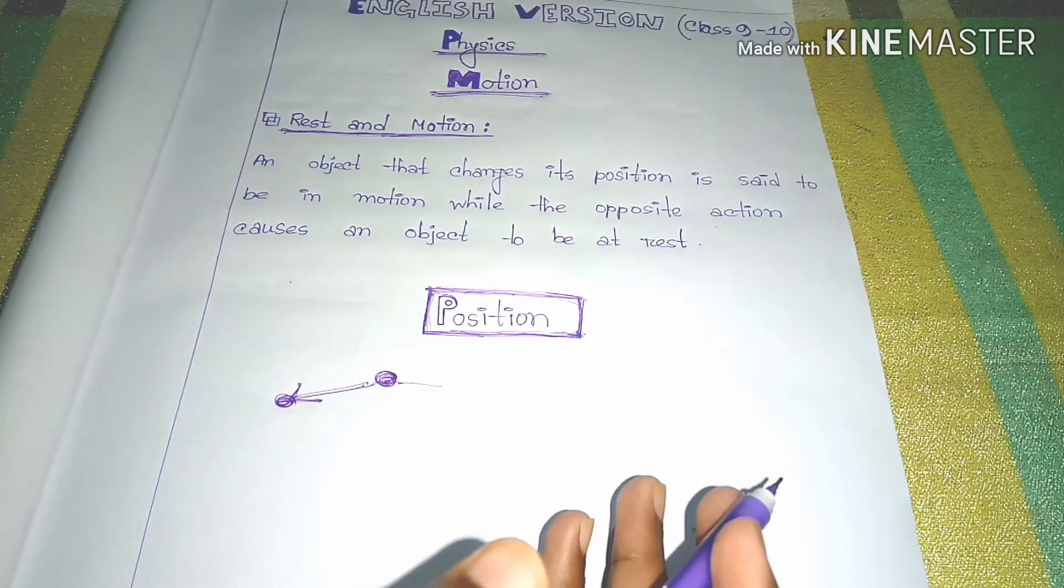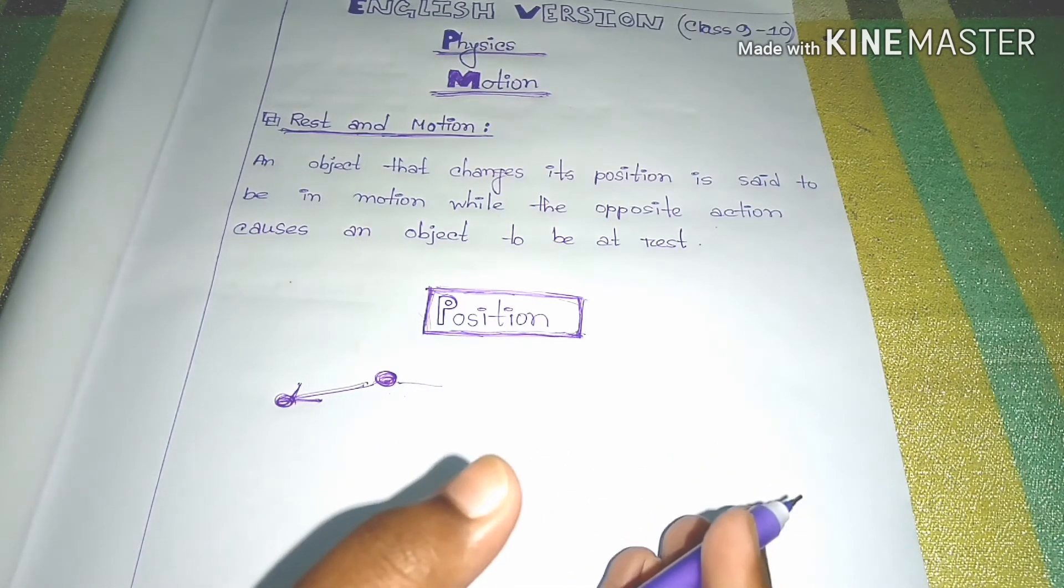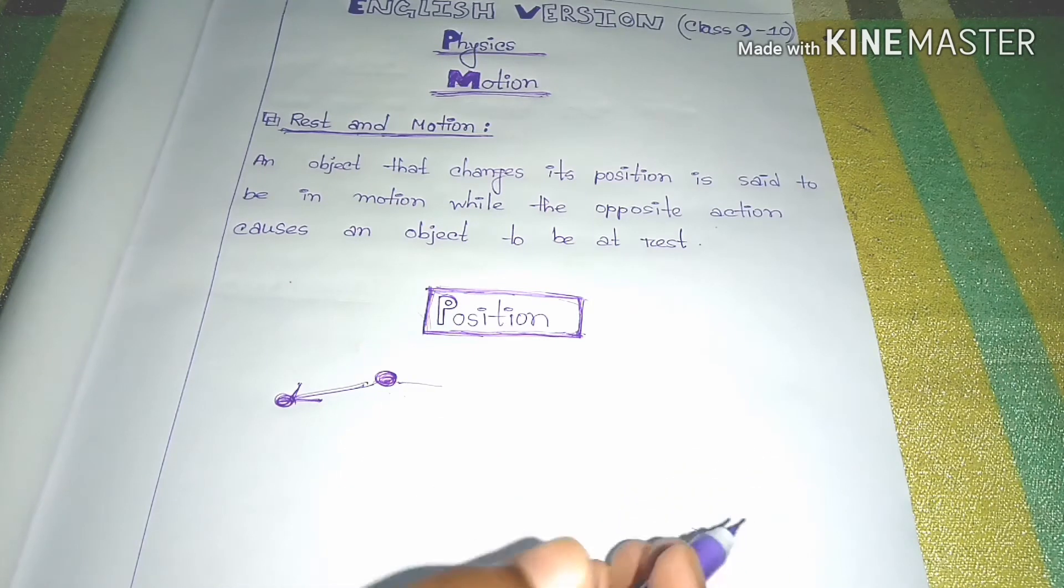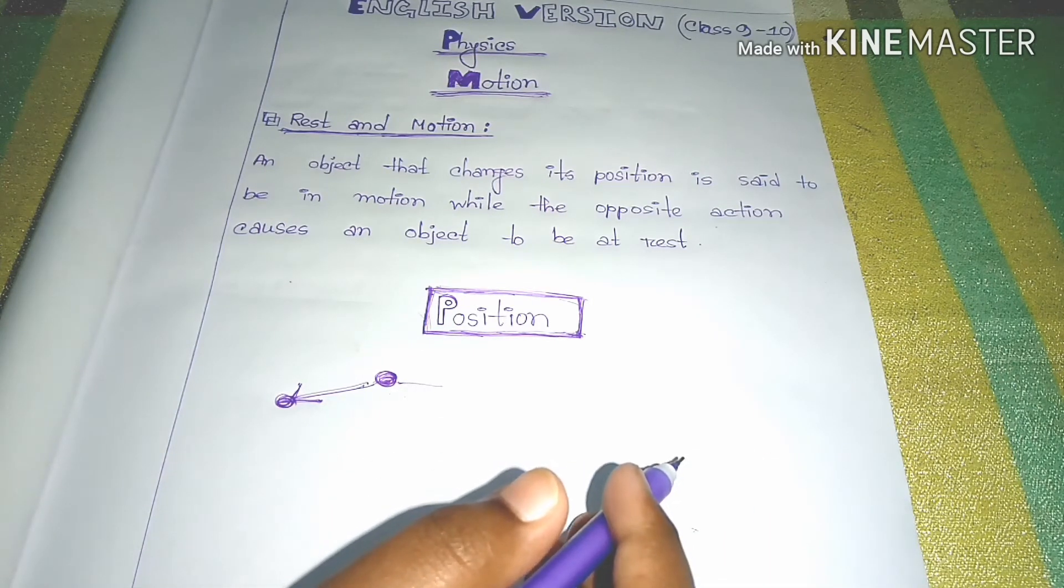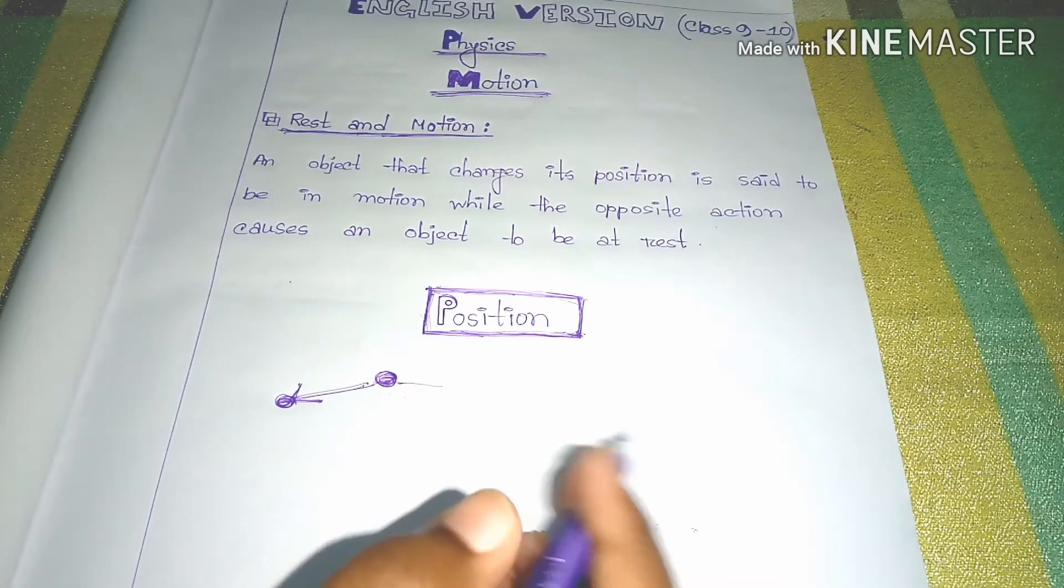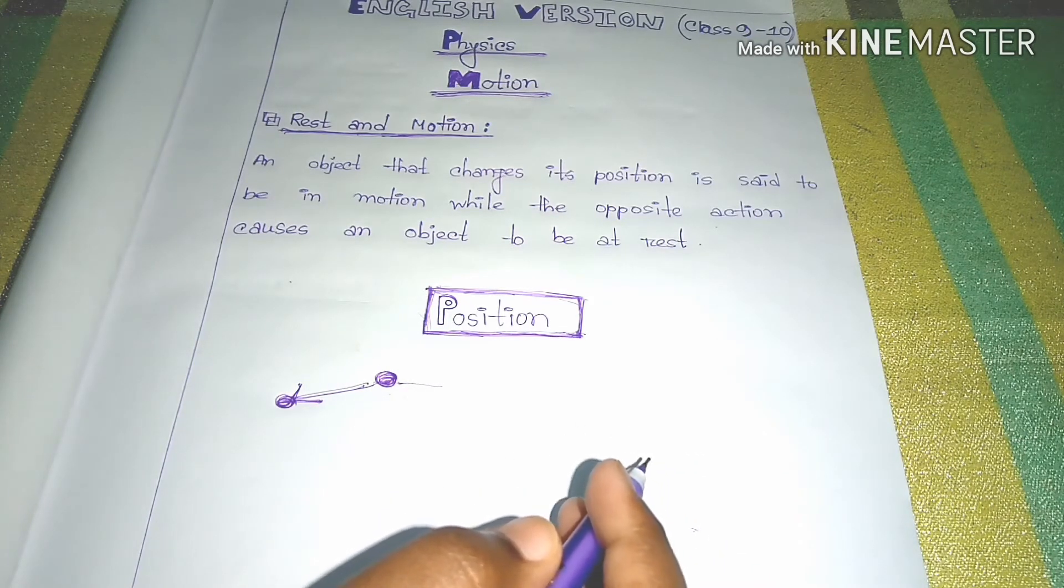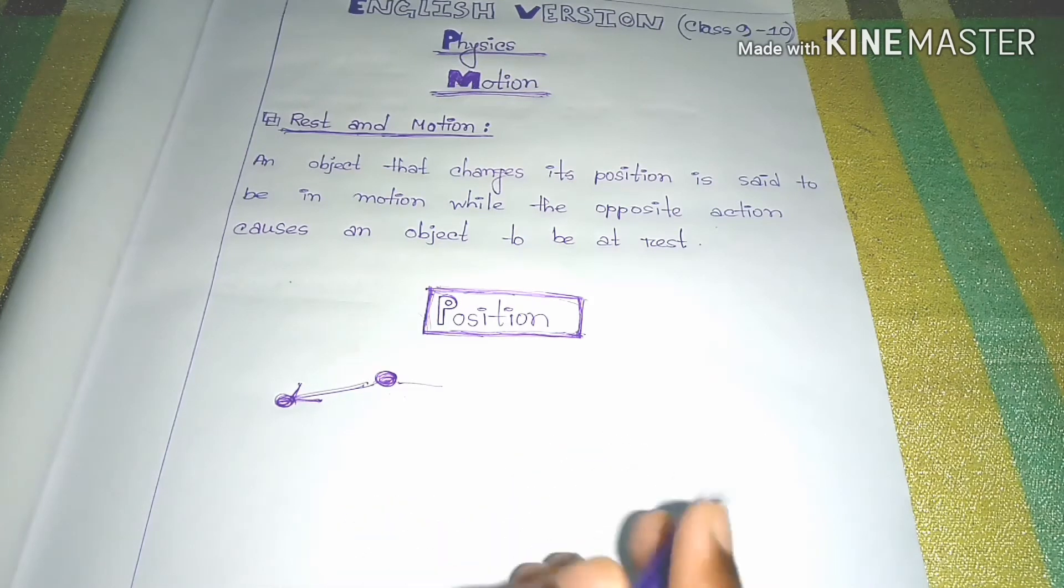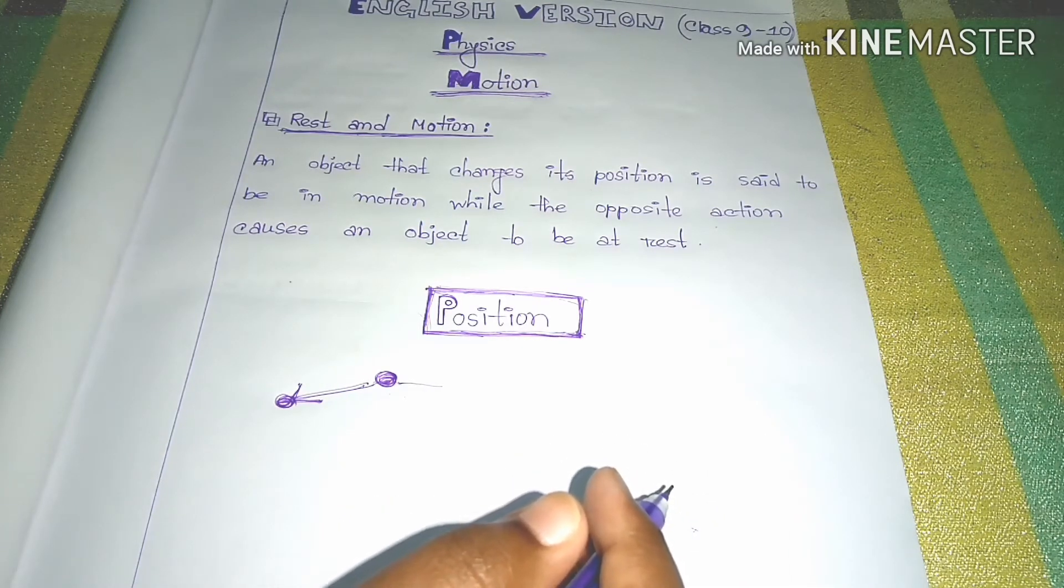Now we can learn about position. Everything is stated with respect to a point, so it has to be mentioned with respect to a reference point. The question is, to specify the position of an object, is it necessary for the reference point or origin to be a still point? Yes, it's very necessary.